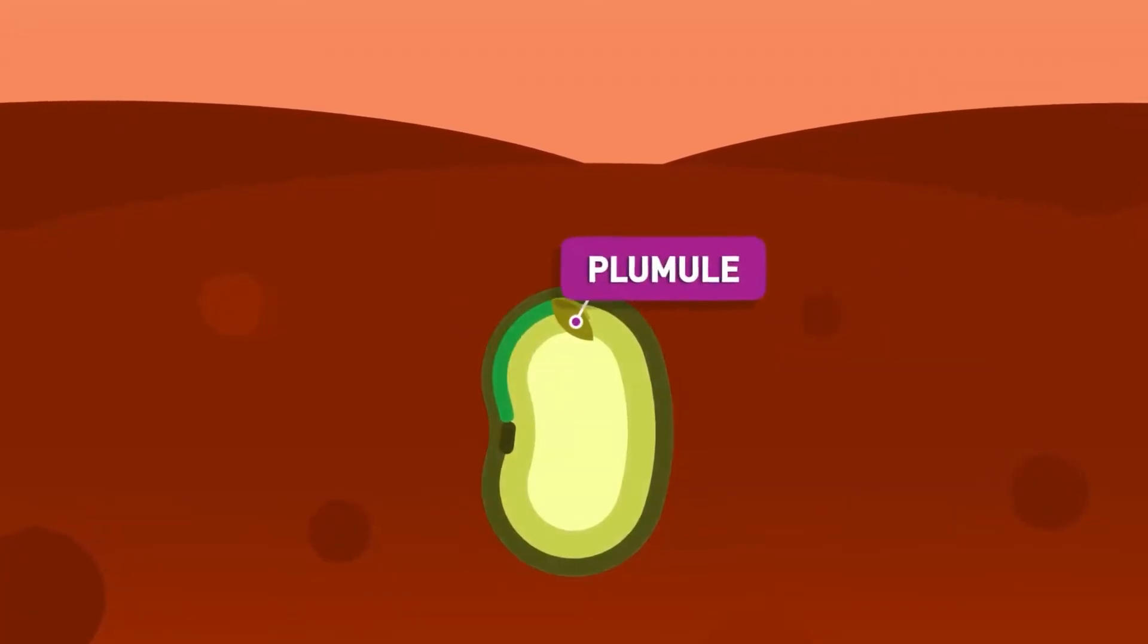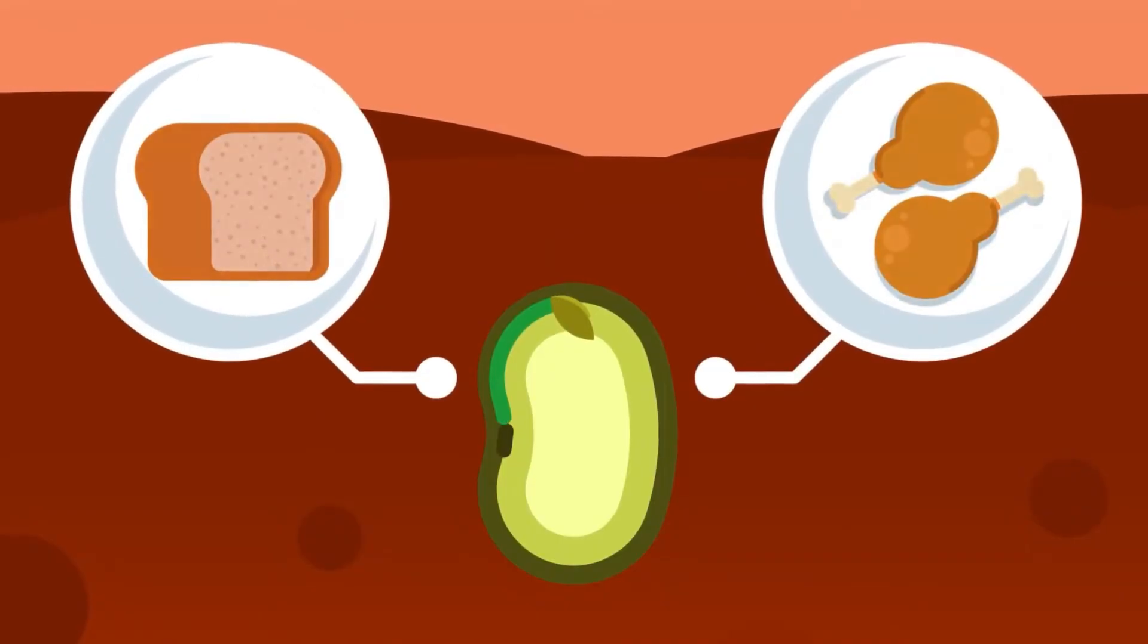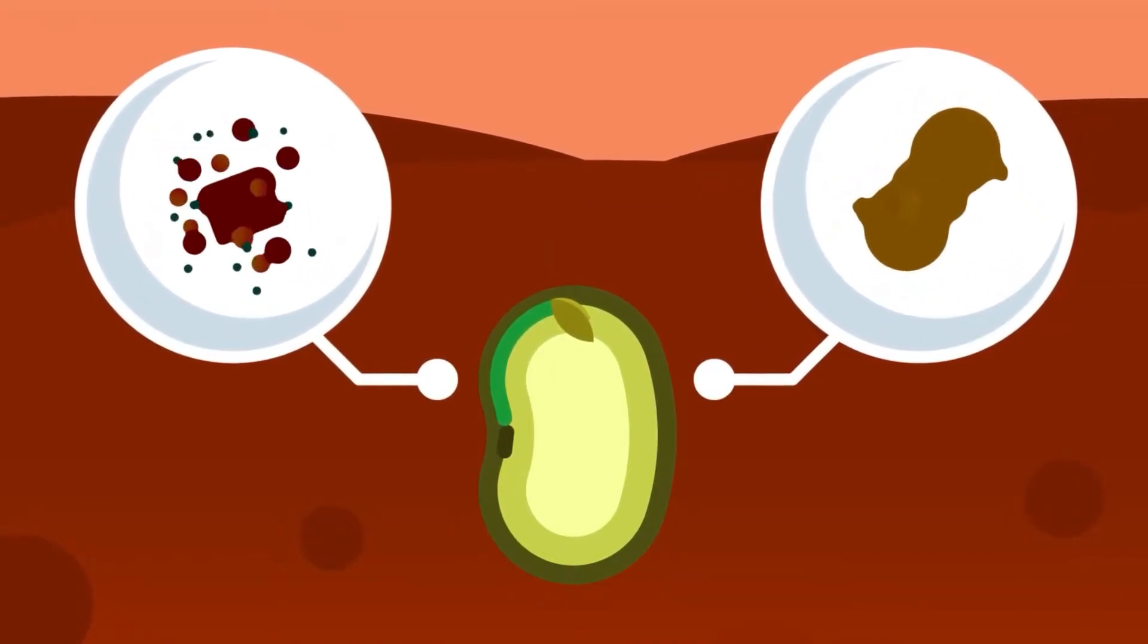That is, the plumule and the radicle. It is good to know that some of the food we eat is also utilized by plants to grow. Can you guess what they are?